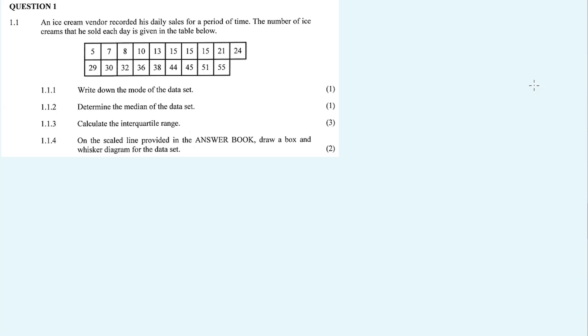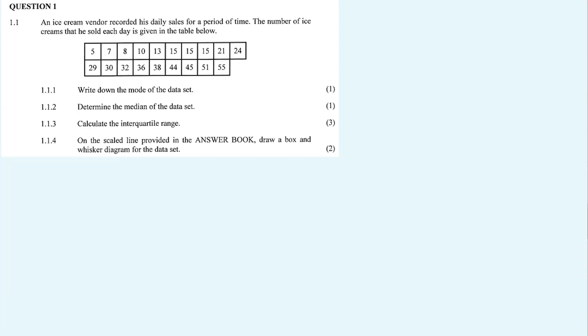Question 1 is a two-part question: 1.1 and 1.2. 1.1 is a box and whisker diagram, or the five number summary, and then 1.2 is a frequency bar graph.